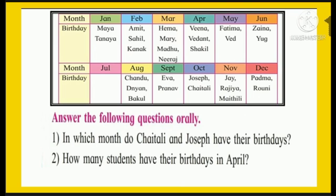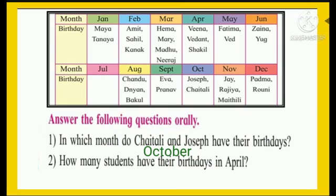Now children, observe the table and answer the following questions orally. Months are given along with when each child's birthday falls. First question: in which month do Chaitali and Joseph have their birthdays? Yes — October.